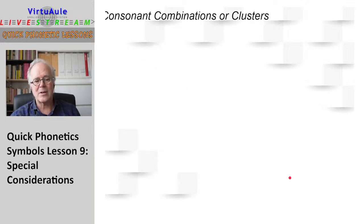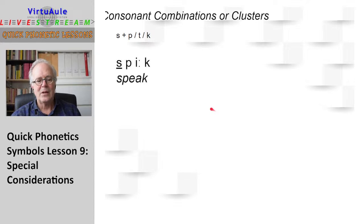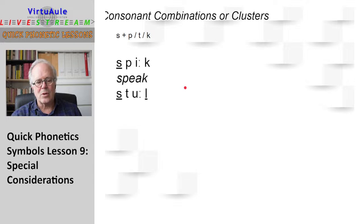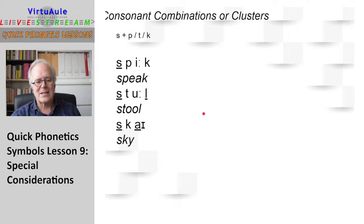Let's look at the consonant combinations — these clusters. First we'll see the S with the P, the T, and the K. We find this in words like 'speak'. You can see how I go from the long S: speak. Practice that. Stool — you see the word stool. Sky. Repeat that.